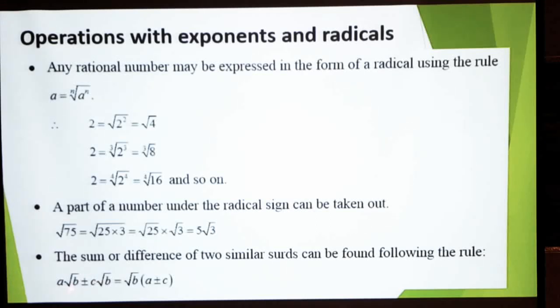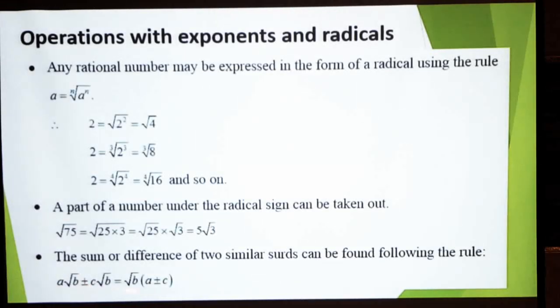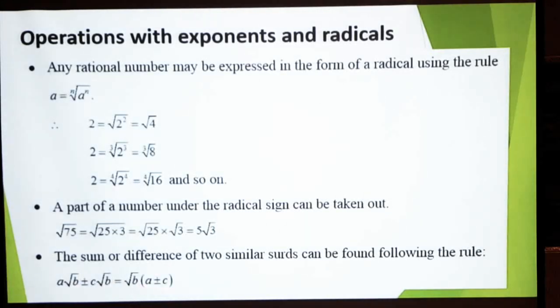اس rule کو follow کر کے آپ surd کی basic addition اور subtraction کر سکتے ہو۔ یہاں پہ focus کریں — similar surd ہے جس کا under the root b part similar ہے تو اس کو common کر دیں۔ a√b + c√b = (a + c)√b — تو under the root b common ہے اور bracket میں a + c آئے گا۔